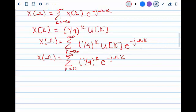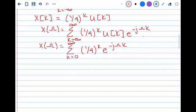Next, we will pull out the K exponent so that it's the summation with (1/4) times e^(-jω) all raised to the K.